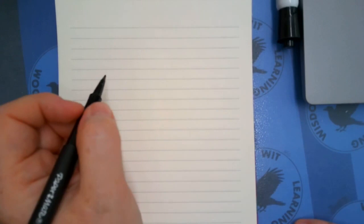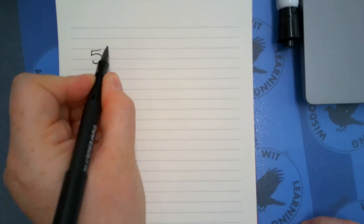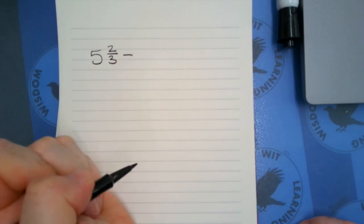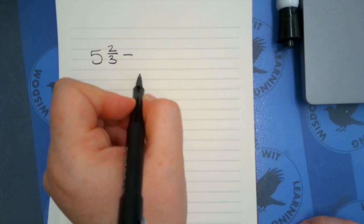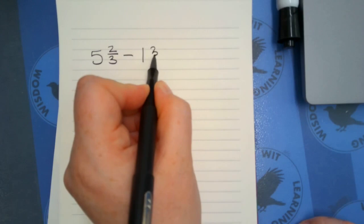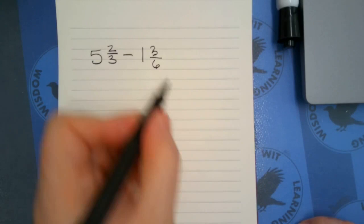I'm going to show you how to subtract when you are dealing with mixed numbers. So I'm going to start off with five and two thirds, and I'm going to subtract one and three sixths.